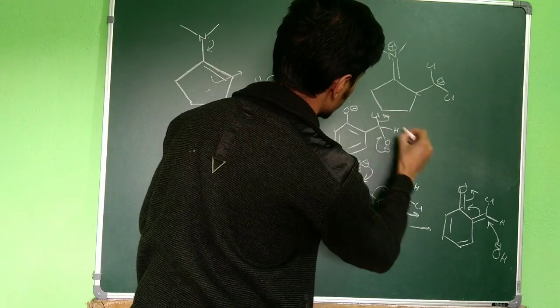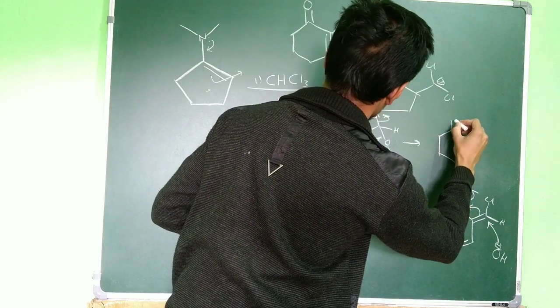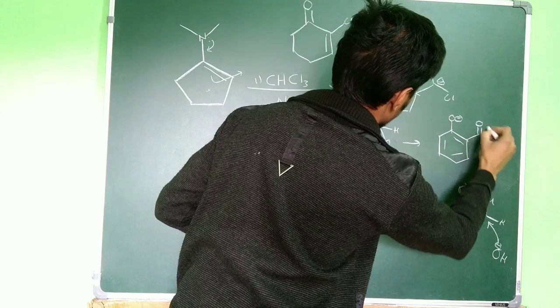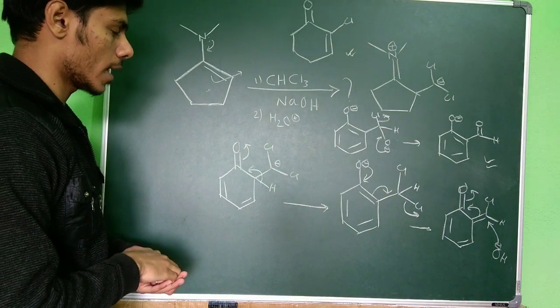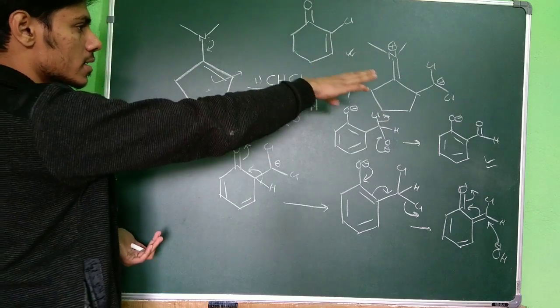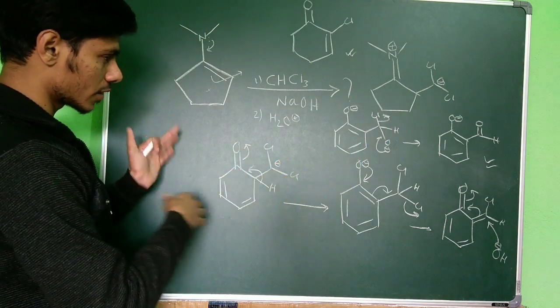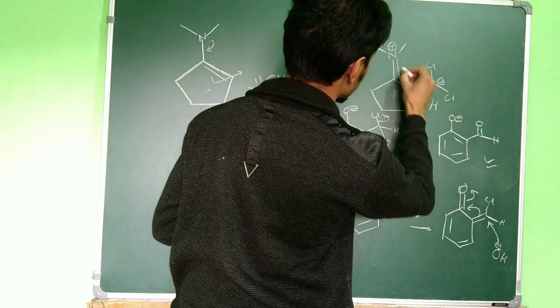And eventually what you will get, you will basically get this O minus. This O minus again gets back its aromaticity, and here you have this Cl, this hydrogen, and this OH. Now in this case also this will form.